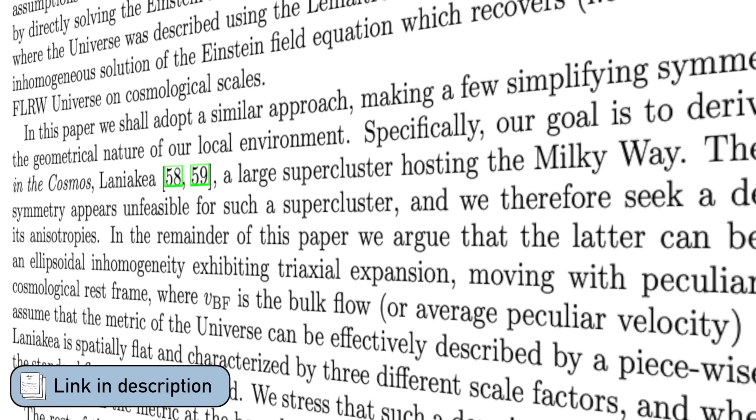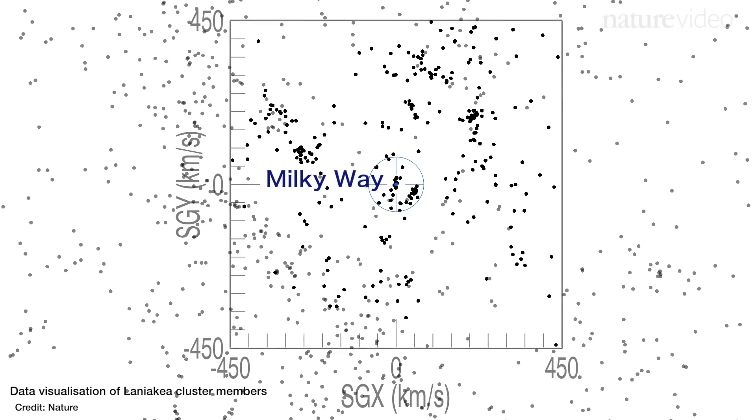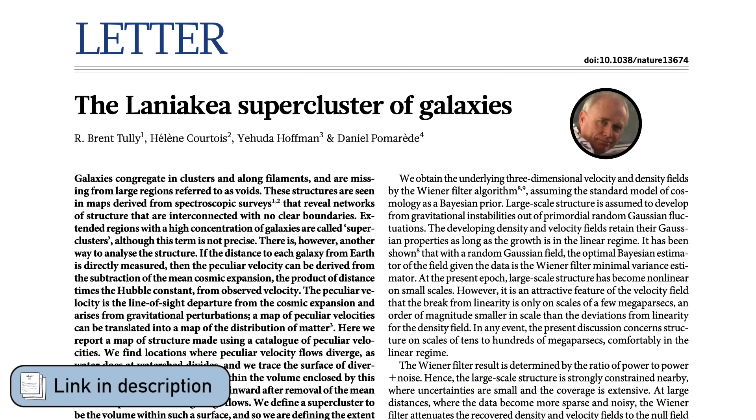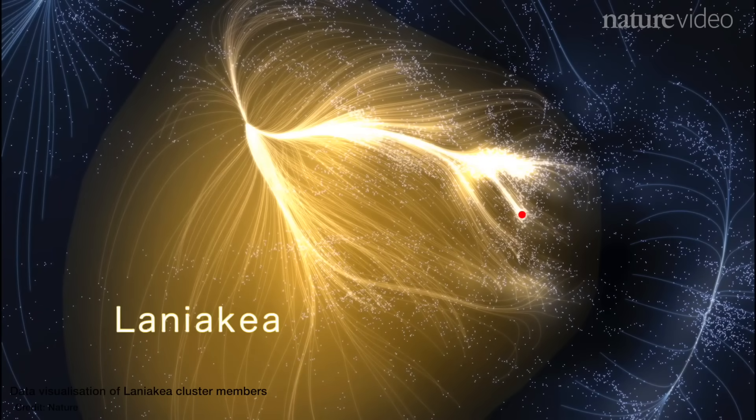One of the ideas for what could be causing the Hubble Tension is if the Milky Way is in an underdense region of the universe — fewer galaxies than normal, more space between galaxies — so you estimate the rate of expansion as faster than it actually is. But Gianni and collaborators point out that the Milky Way is actually in the Laniakea supercluster of over 100,000 galaxies, first discovered in 2014 by Tully and collaborators when they determined that all of these galaxies were gravitationally bound together.